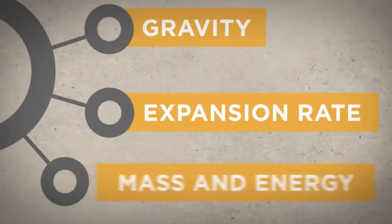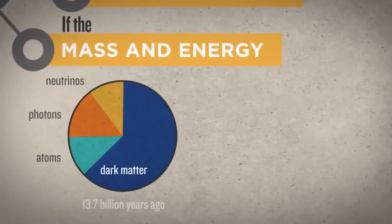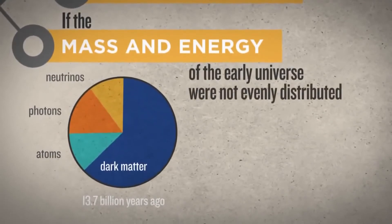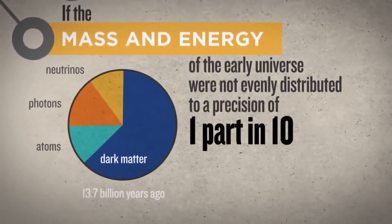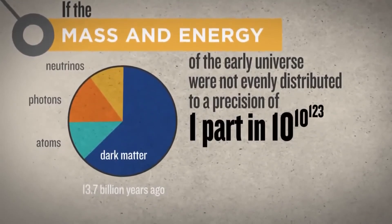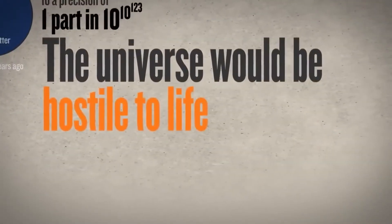Or another example of fine-tuning. If the mass and energy of the early universe were not evenly distributed to an incomprehensible precision of 1 part in 10 to the 10 to the 123rd, the universe would be hostile to life of any kind.